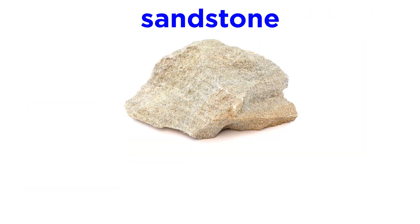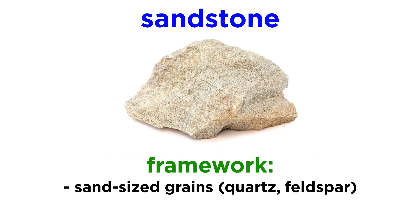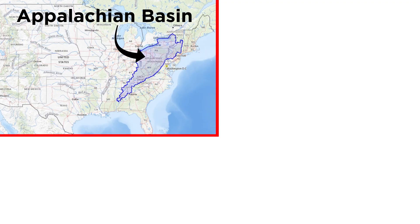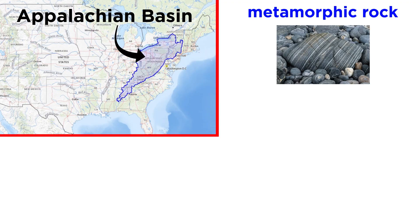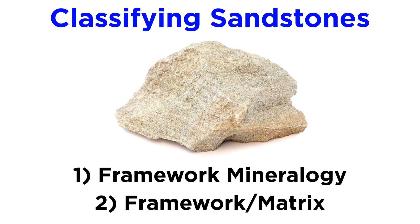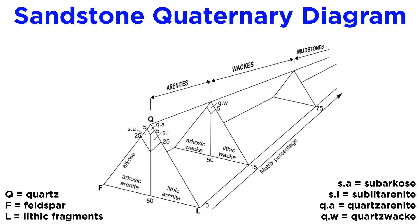Let's start with sandstones. We already know that sandstone is a rock composed mainly of sand-sized grains, which make up the rock's framework. The most common framework minerals are quartz, followed by feldspar. Another common framework constituent are pieces of weathered and eroded rock called lithic fragments. For example, the sedimentary rocks of the Appalachian Basin contain abundant fragments of metamorphic rock derived from the erosion of uplifted metamorphic terrain during the Acadian orogeny. Geologists classify sandstones by combining two properties: framework mineralogy and the proportion of framework to matrix. A quaternary diagram can be used to illustrate the different types of sandstone.